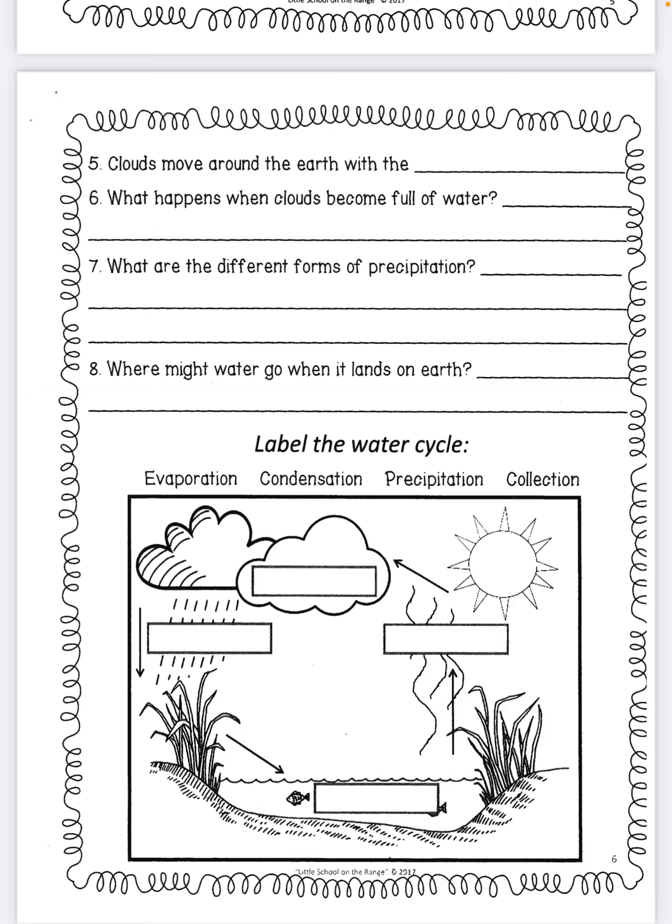And number eight: Where might water go when it lands on earth? Now, at the bottom, you will see a little diagram where you can label the water cycle again and color if you choose.